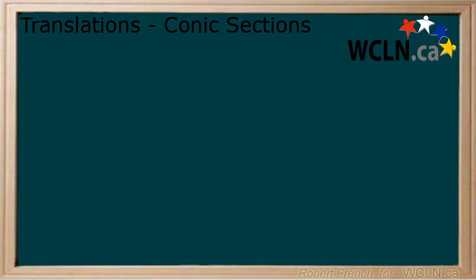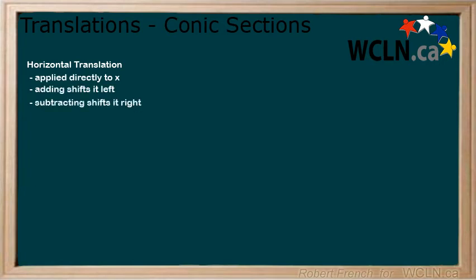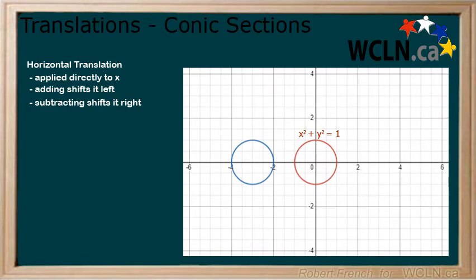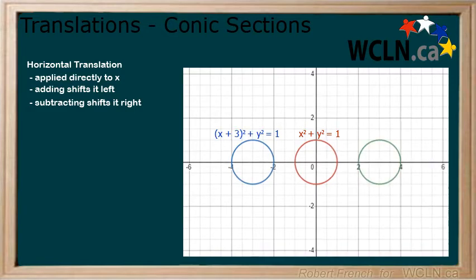First, we will look at horizontal translations. Horizontal translations are applied directly to X. You add to move the function left, and you subtract to move the function right. Consider the equation and graph of a circle centered at the origin. To shift the circle 3 to the left, we add 3 directly to X. To move it to the right, we subtract 3 directly from X.